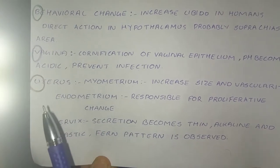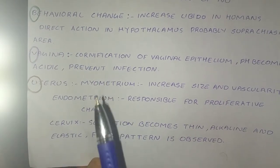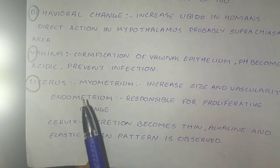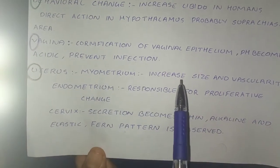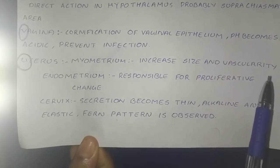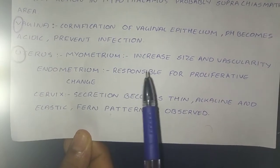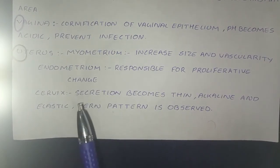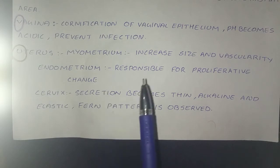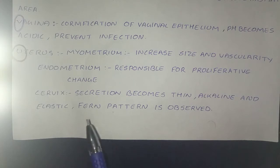U stands for uterus. The uterus has three parts: myometrium, endometrium, and cervix. Estrogen increases the size and vascularity of the myometrium, causes proliferative changes in the endometrium, and makes cervical secretion thin, alkaline, and elastic — resulting in the fern pattern.